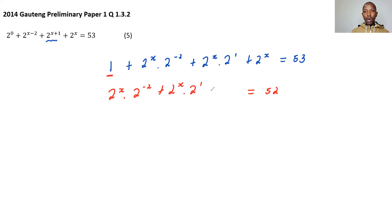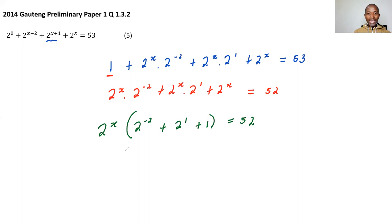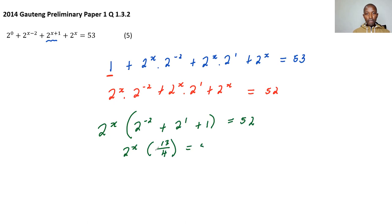Taking the 1 to the right gives 52. I notice 2 to the power x is common in all three remaining terms, so I factor it out: 2 to the power x times the bracket 2 to the power negative 2, plus 2 to the power 1, plus 1, equals 52. Evaluating the bracket: 2 to the power negative 2 plus 2 plus 1 gives 13 over 4. So 2 to the power x times 13 over 4 equals 52.